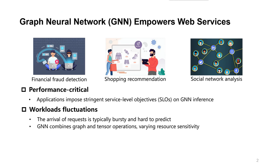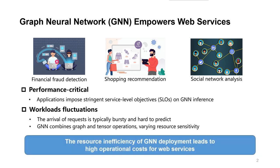The emergence of deep learning has made graph neural networks a powerful tool for graph analysis. Today, GNN has been widely used in online web services. GNN inference workloads often require high performance and exhibit significant fluctuations. Thus, the resource inefficiency of GNN deployment leads to high operational costs for web services.